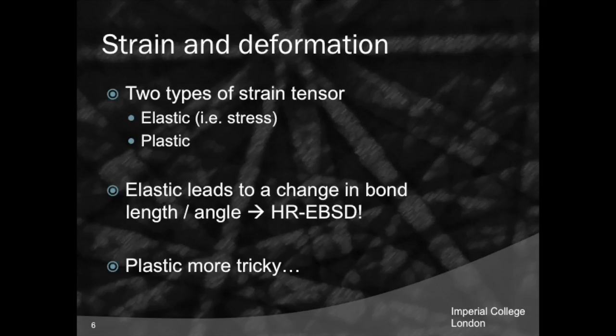We can get some idea about plasticity by thinking of geometrically necessary dislocations. But as I'll convince you later in the week, there are certain cases when I can have a significant amount of plastic strain and absolutely no GNDs in my system. So please be very careful about what you link your data towards — you have to be quite specific about which terms of your tensors you're evaluating.